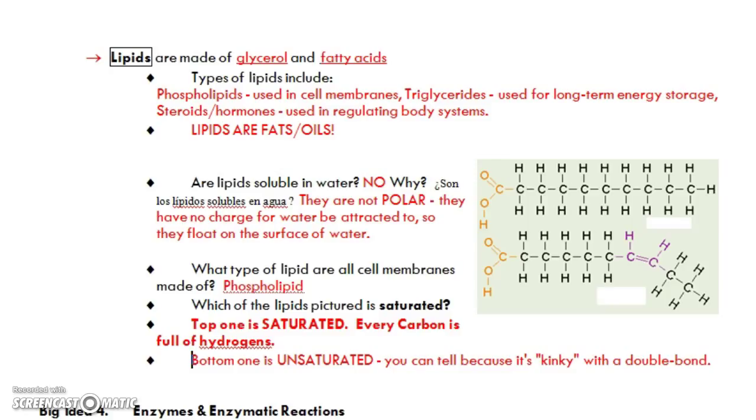All cell membranes are made of phospholipids. You might remember that from your crash course video. And then in this picture, the saturated one is on top. You can tell because every carbon has hydrogens all the way around it. So it's full, saturated, full of hydrogens. The one on the bottom is unsaturated. It's got this weird kink in it with a double bond. And this causes unsaturated fats to be liquid at room temperature. And saturated fats are going to be solid at room temperature.